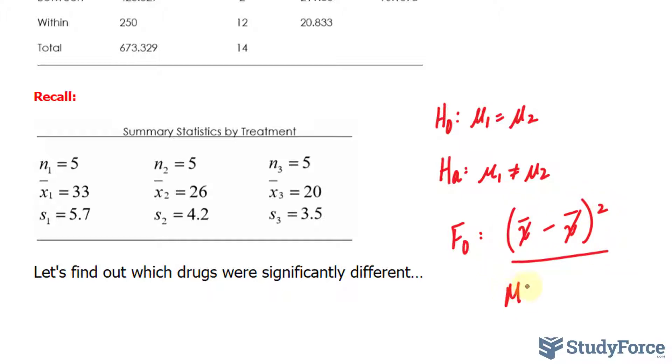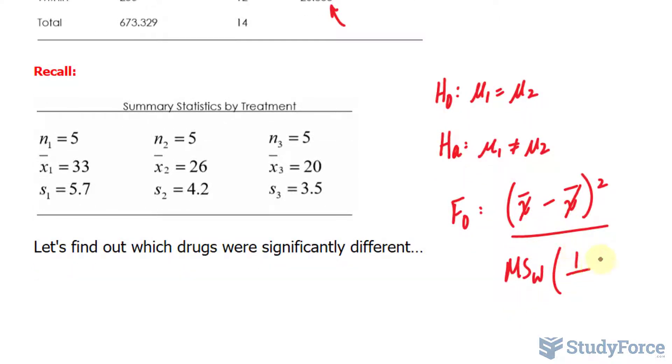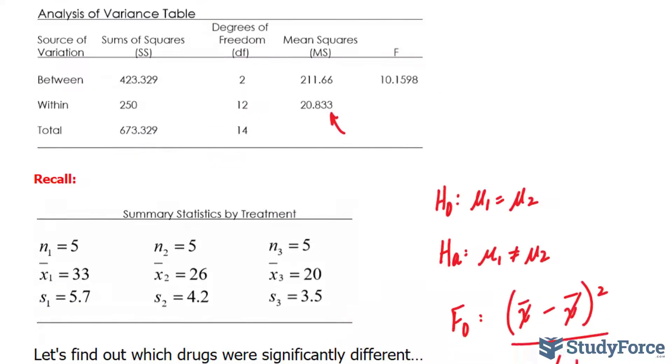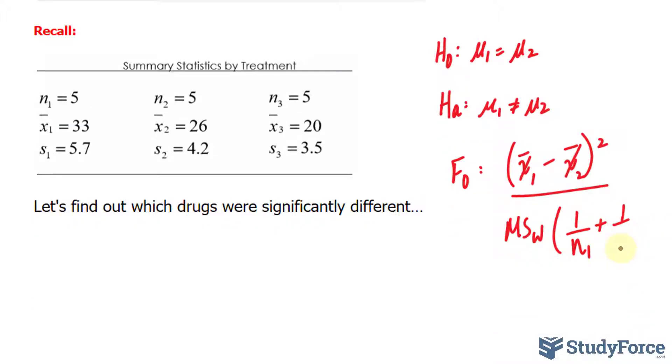the mean square within and that gets multiplied to 1 over the number of individuals in that first group, I'll call it N sub 1, and just to be clear this should be X bar sub 1, X bar sub 2, plus 1 over the number of individuals in the other group.